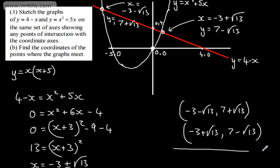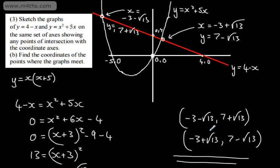So those are the coordinates in exact form of the points where the graphs meet. They're not integer solutions or nice fractions, but that's fine. This has been an introduction to simultaneous equations where one is linear and one is not. In later videos, we'll look at examples where y is not already expressed in terms of x, requiring us to make either x or y the subject before substituting.